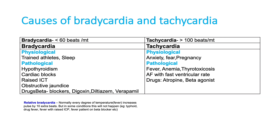Causes of bradycardia include physiological causes — trained athletes can have bradycardia, which is physiological. During sleep, a person can have a low heart rate. Pathological causes include hypothyroidism, cardiac blocks such as second degree and third degree heart blocks, raised intracranial pressure, obstructive jaundice, and drugs like beta-blockers, diltiazem, verapamil (calcium channel blockers), and digoxin. Tachycardia is defined as heart rate more than 100 beats per minute, caused by anxiety, fear, pregnancy, anemia, fever, and thyrotoxicosis.